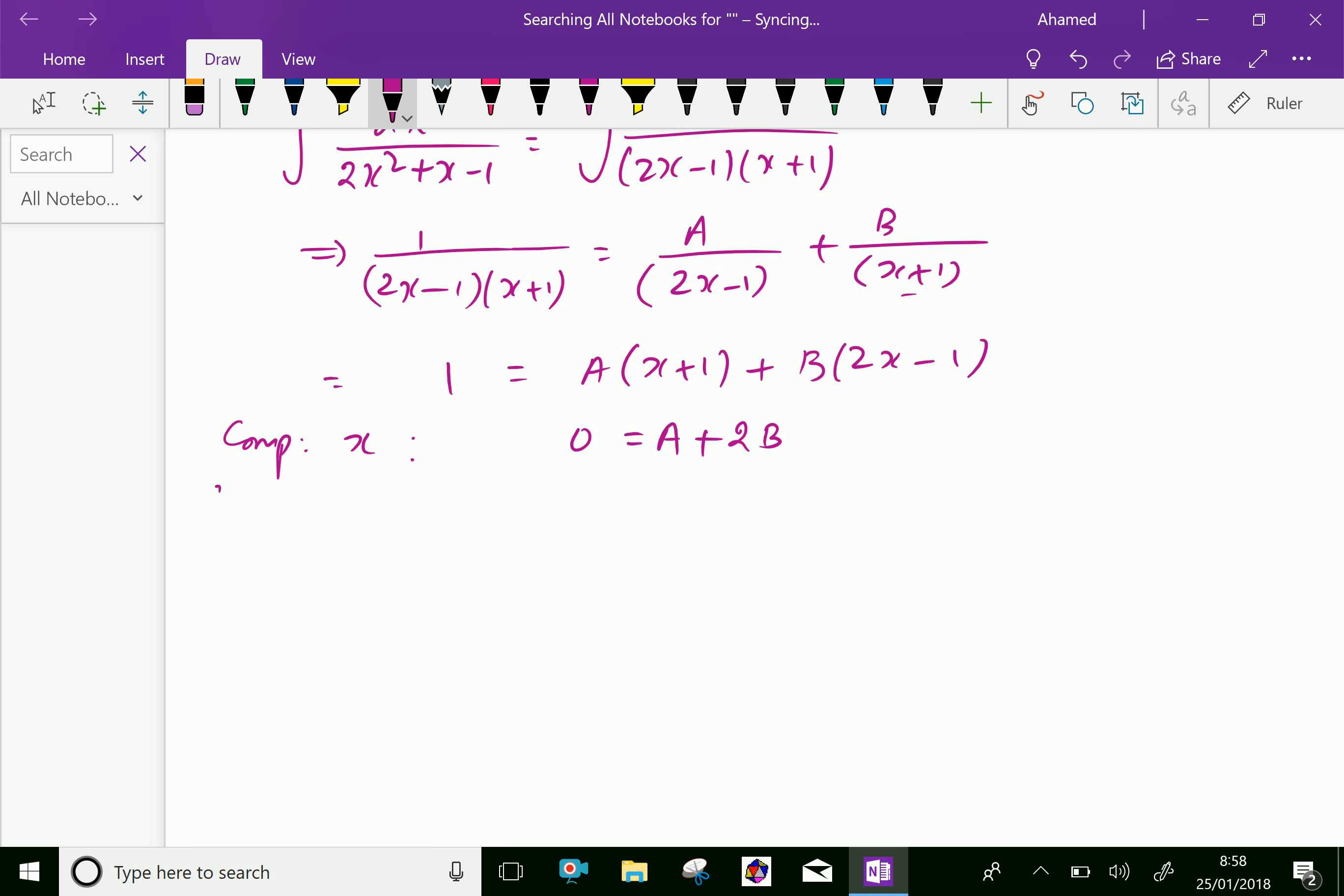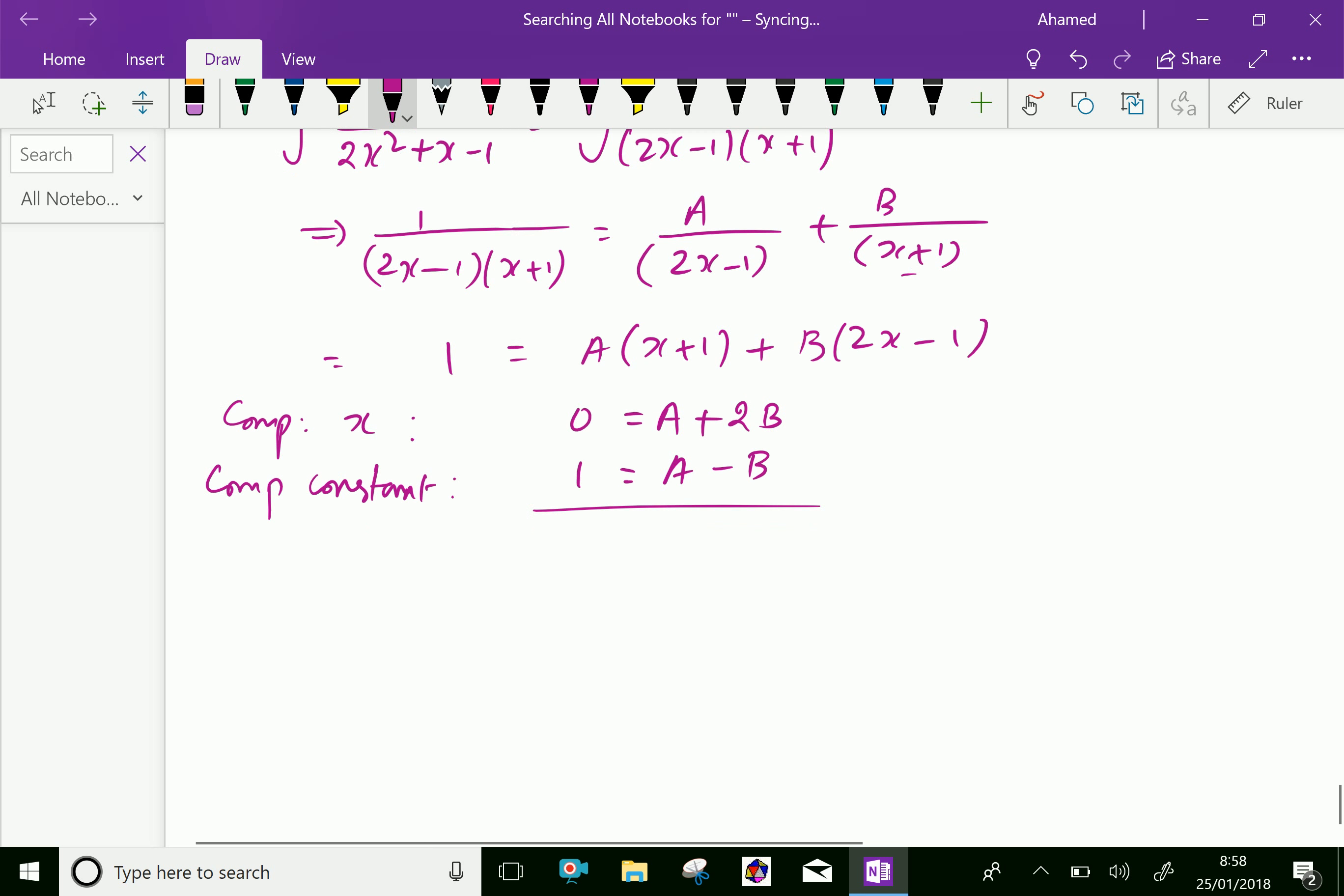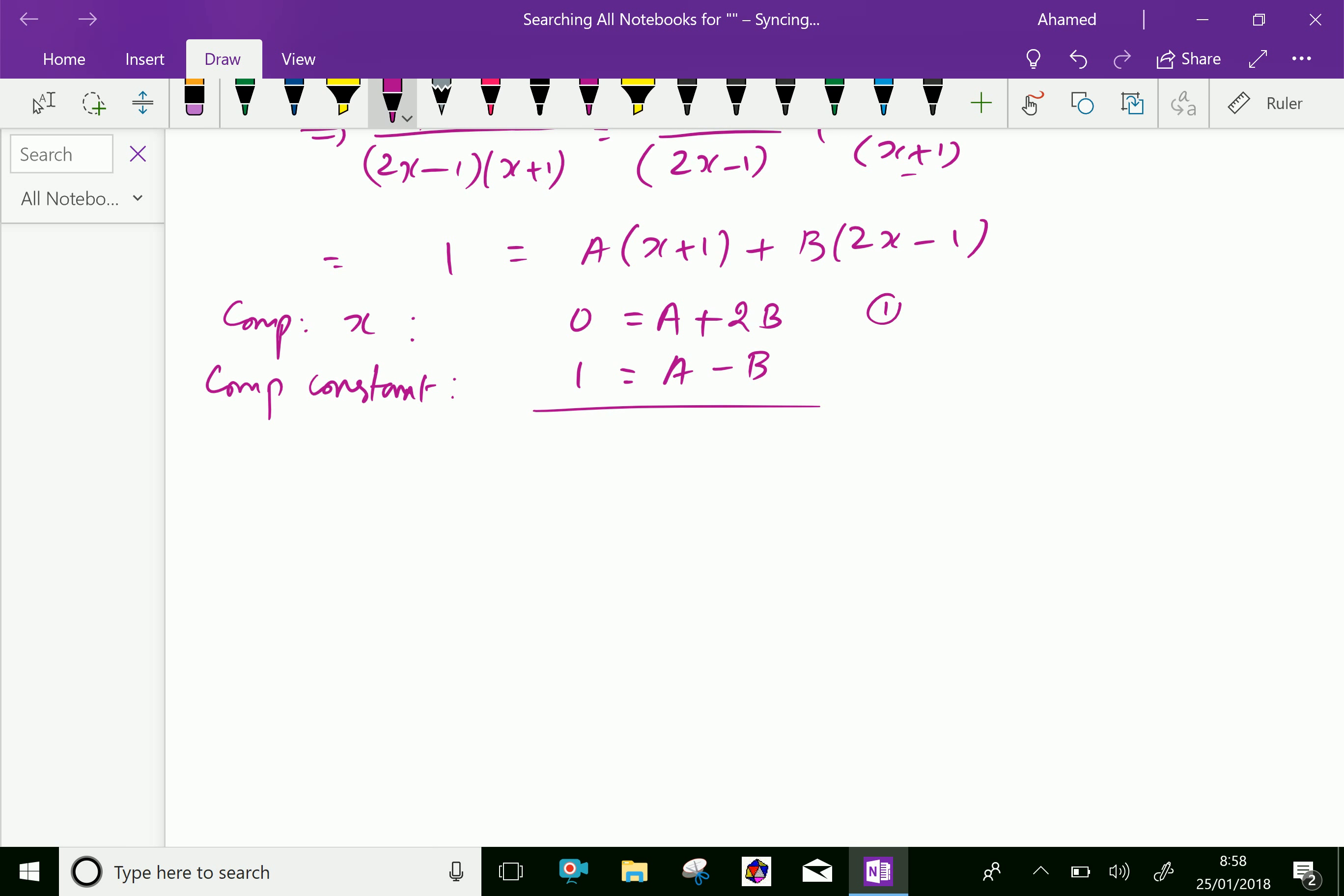Now, comparing constant, we get constant left side is 1, right side is a minus b. By subtracting both equations 1 and 2, we get 0 minus 1 is minus 1, a minus a is 0, and 2b minus b is 3b, which gives b equals minus 1 over 3.